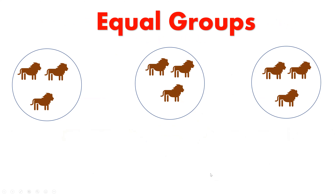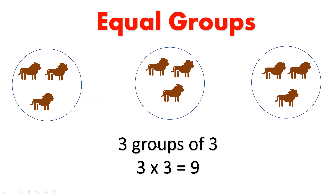Equal groups: write a multiplication sentence that matches the picture in front of you. We have three groups and in each group I see three lines. We have three groups of three and our multiplication sentence is three times three equals nine.